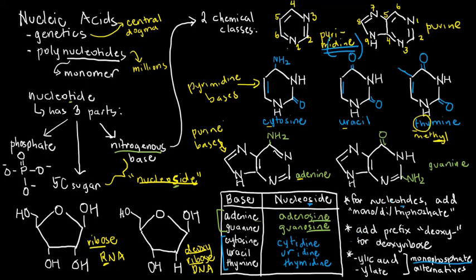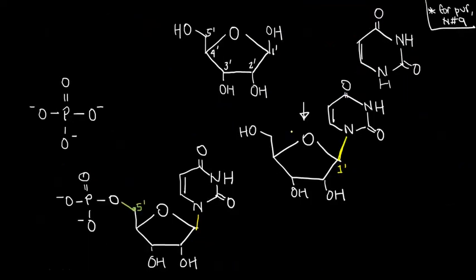Now is the time to link our three parts together. Before I continue, notice the way I numbered my sugar: 1', 2', 3', 4', 5'. This is something we need to deal with — why do we put a prime here? Why not just 1, 2, 3, 4, 5?